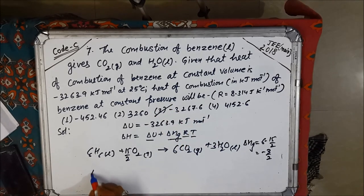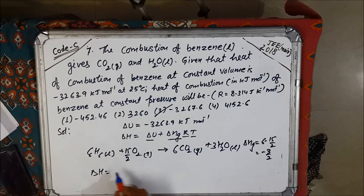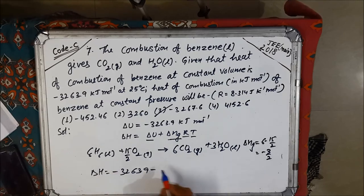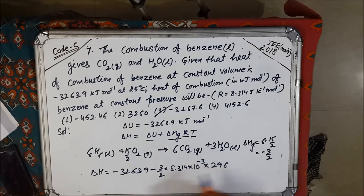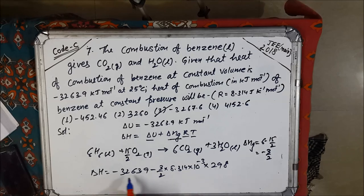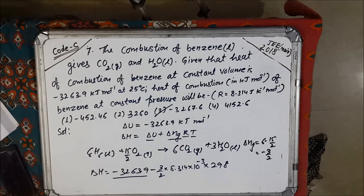To calculate: ΔH = −3263.9 + (−3/2)(8.314 × 10⁻³)(298). Since the value must be more negative than −3263.9, there is only one matching option, which is the right answer.